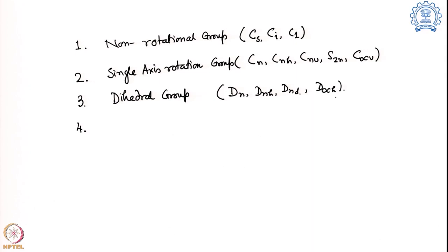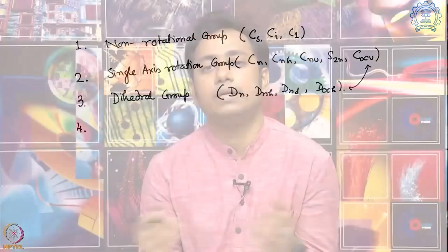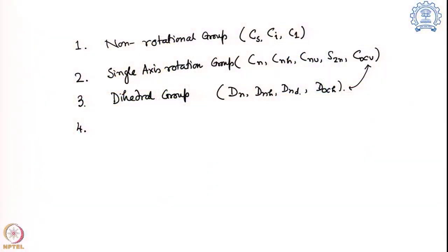D∞H is for the linear molecule. The difference between C∞V and D∞H is whether you have a centre of symmetry or not — whether both sides of the linear molecule are the same. If they are the same, it belongs to D∞H and has a centre of symmetry. If not, it belongs to C∞V. The last group is the cubic group, which are very highly symmetric point groups: tetrahedral and octahedral, containing 24 and 48 symmetry elements respectively.